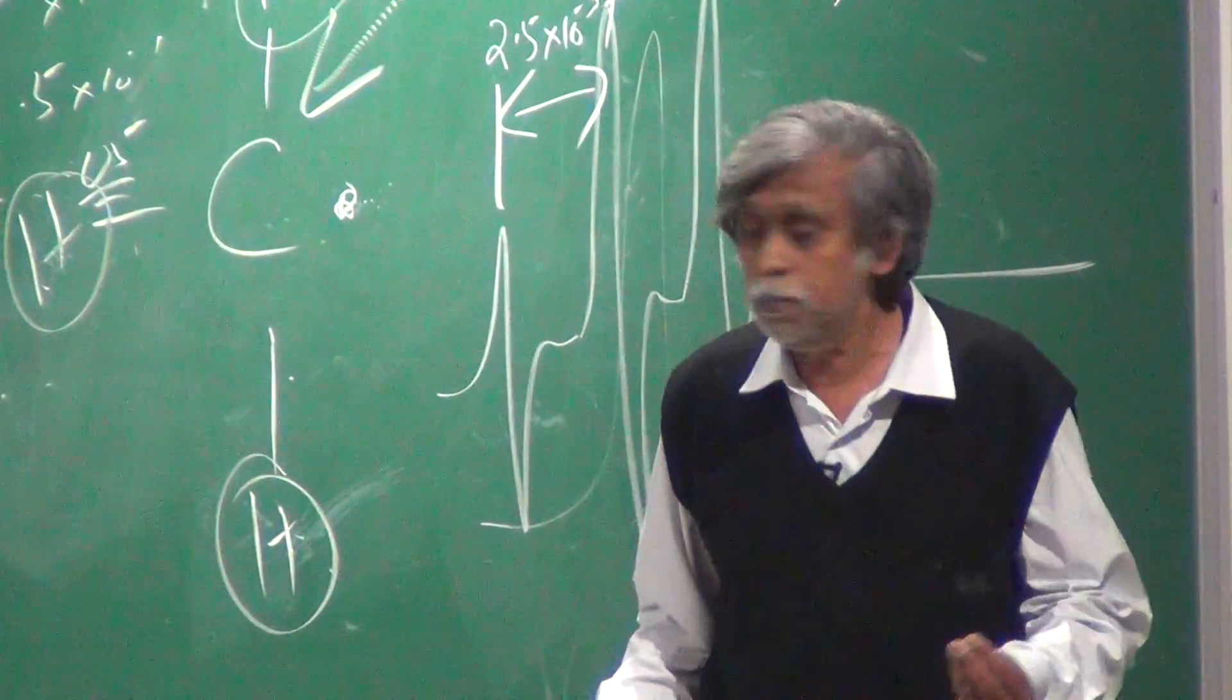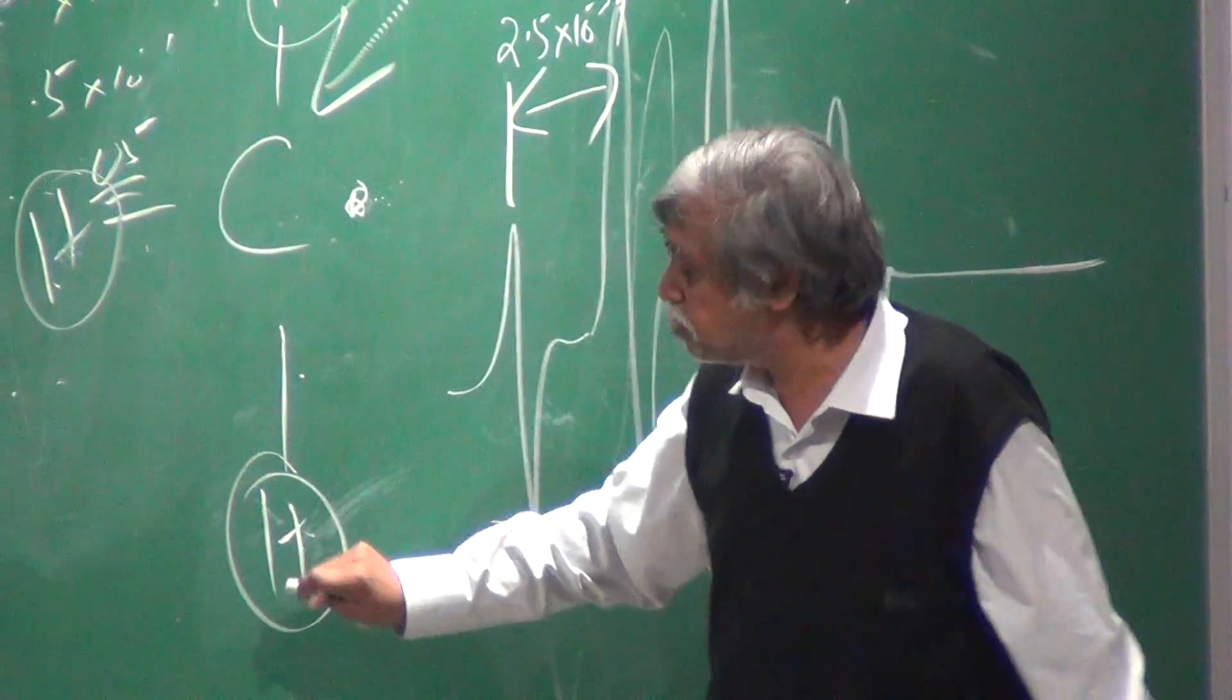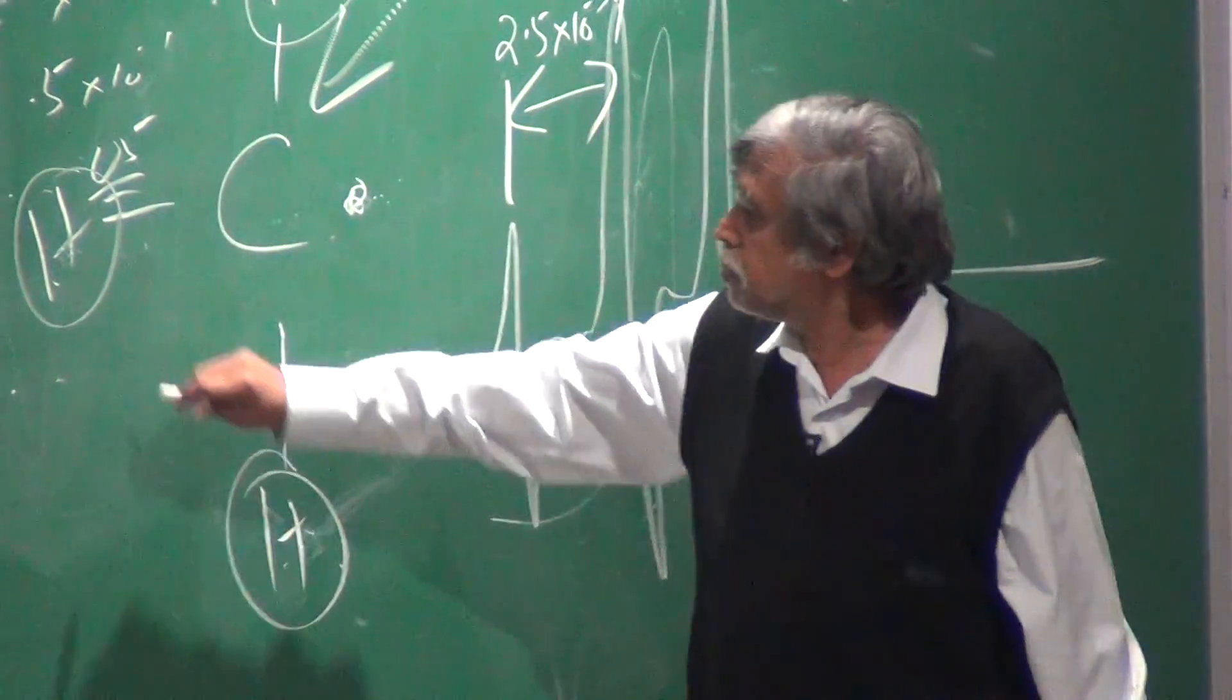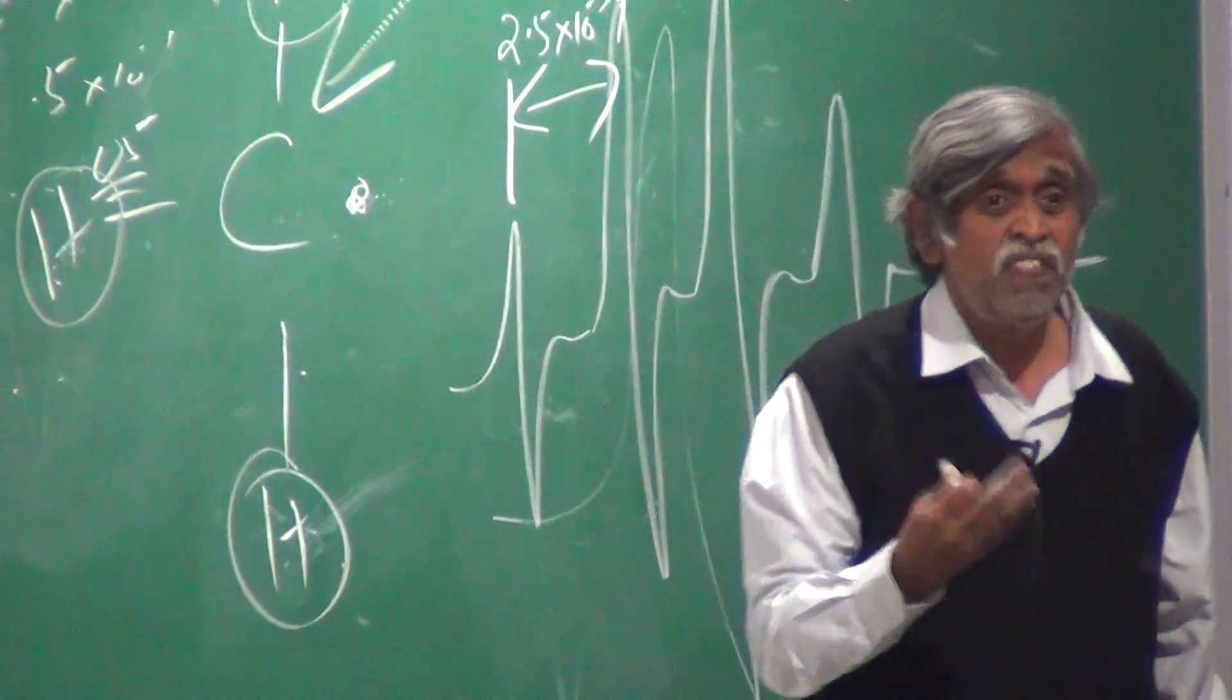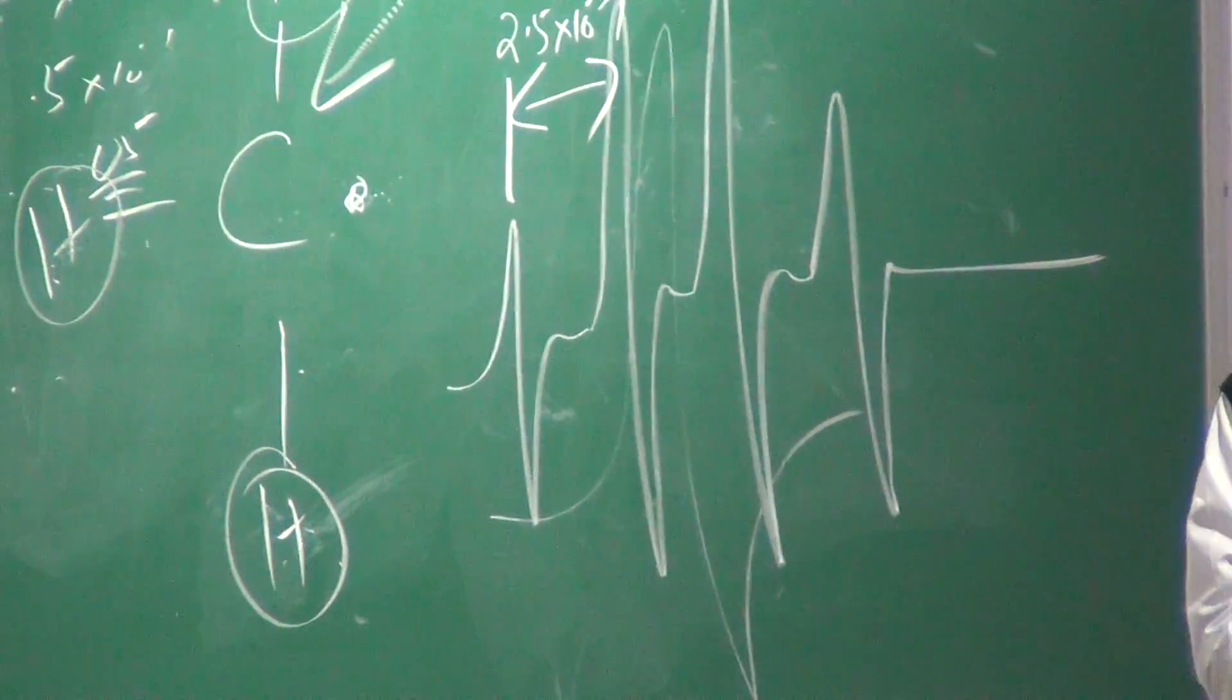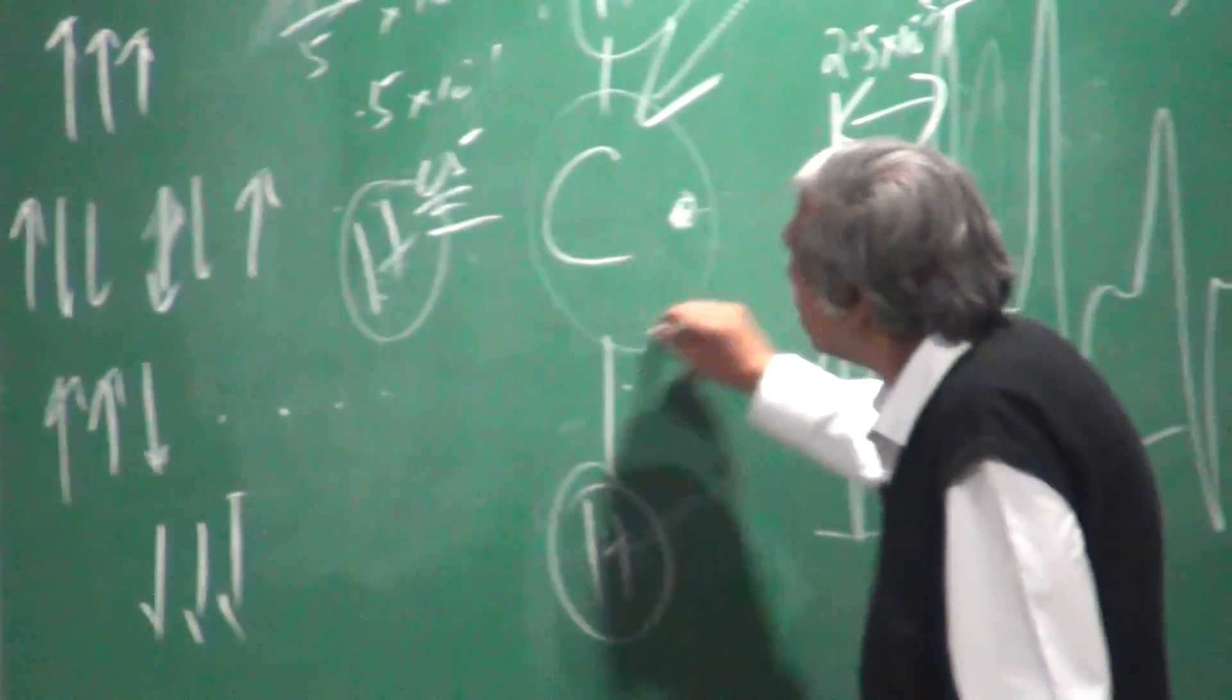So 5% of the total time this electron actually spent on this hydrogen. 5% on this hydrogen, 5% on this hydrogen, which essentially means it is 15% of the time it spends on hydrogen. And therefore I know that 85% of the time it has to spend on carbon.